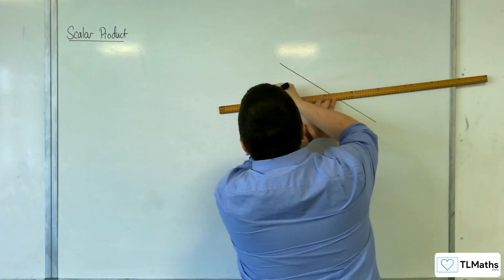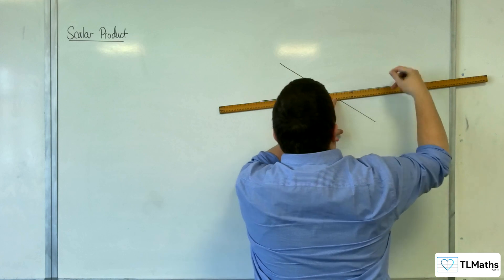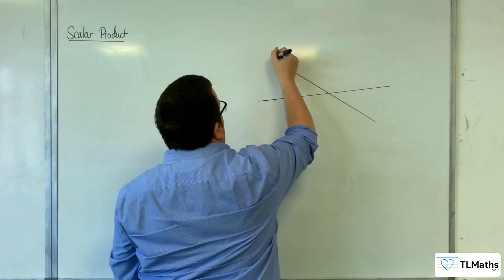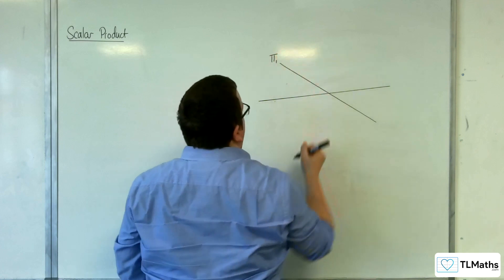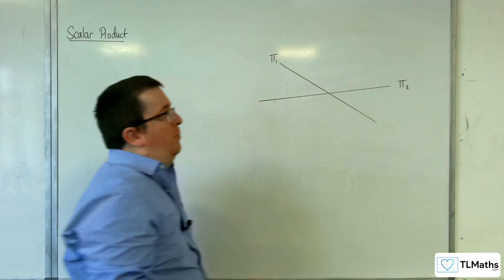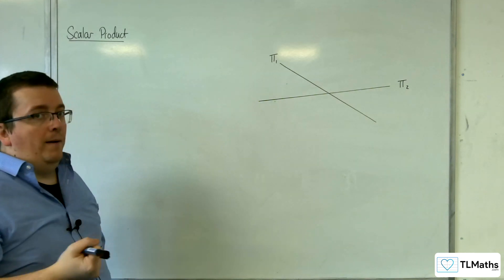So let's say these are the two planes. And let's label them, let's label this one as pi 1 and this one as pi 2. Quite often when we label planes and give them names, we label them with pi.